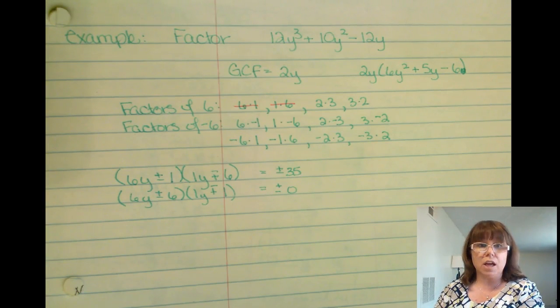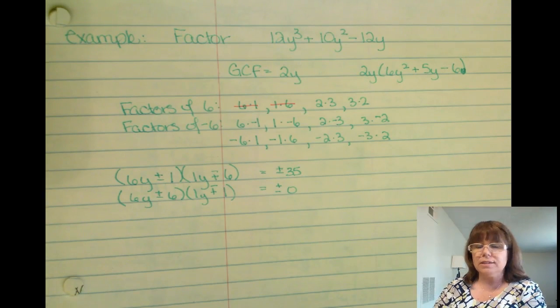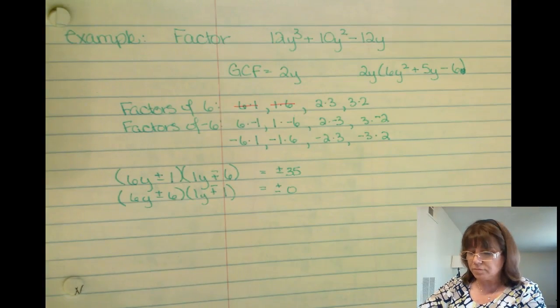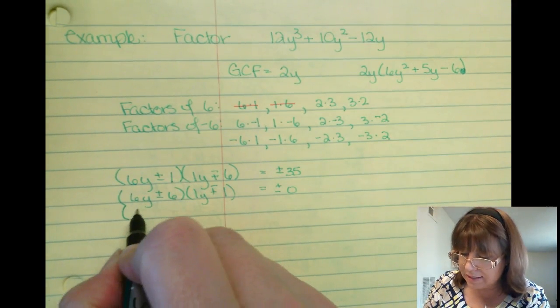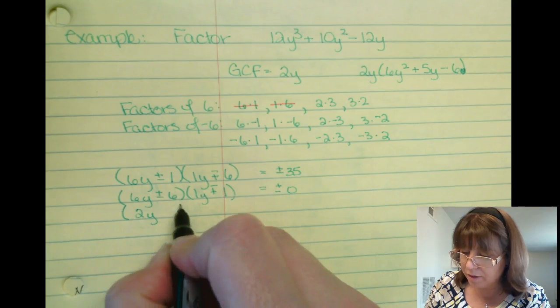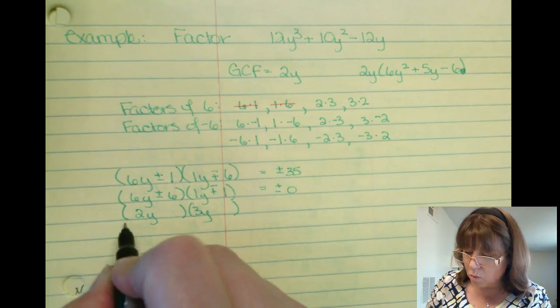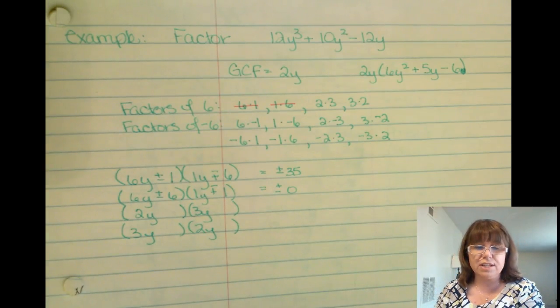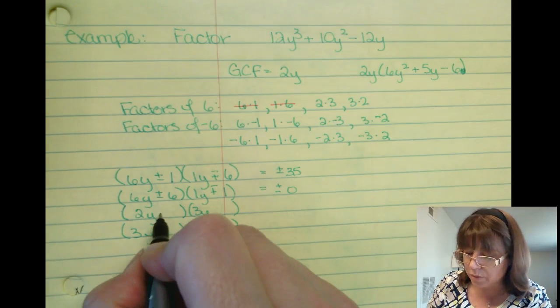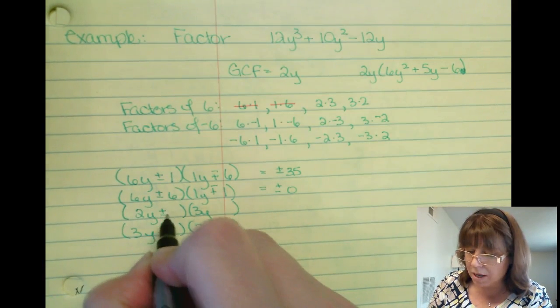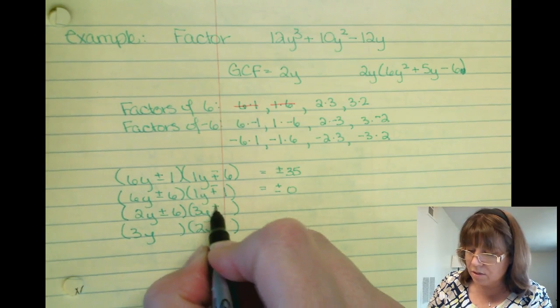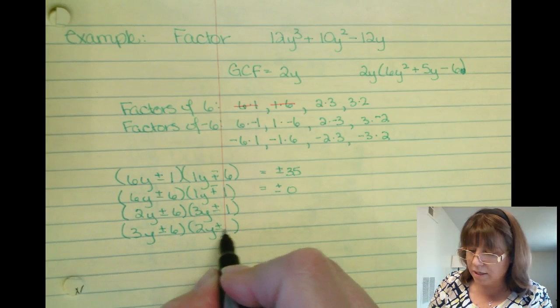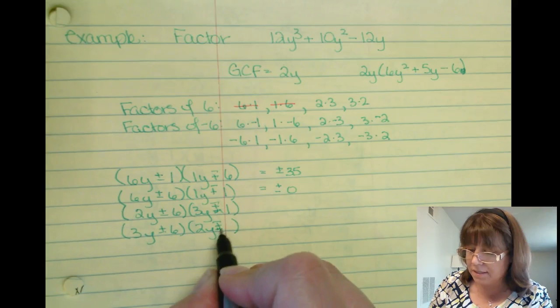So that eliminated a lot of work. Let's see if I can eliminate any of these other 6 and 1s. Well in that case, it's either going to be a 2y up here and a 3y, or a 3y and a 2y. And let's just see how 6 and 1 falls through. So I either have a plus or minus 6, plus or minus 1, plus or minus 6, plus or minus, or plus, sorry, it's the opposite, 1.